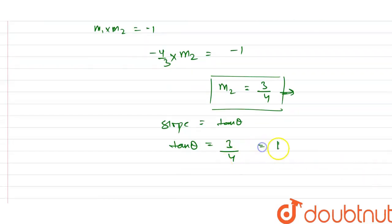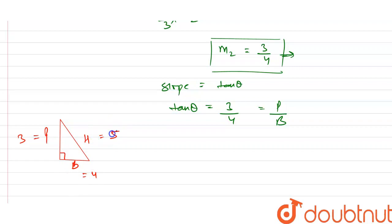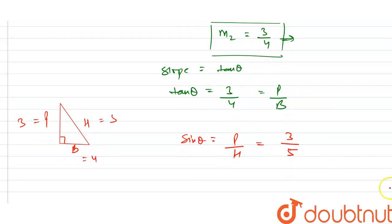tan θ = perpendicular / base। एक right angle triangle draw करते हैं — perpendicular है 3, base है 4, और hypotenuse Pythagoras theorem से आएगा 5। यहां से हम कह सकते हैं sin θ = perpendicular / hypotenuse = 3/5, और cos θ = base / hypotenuse = 4/5।